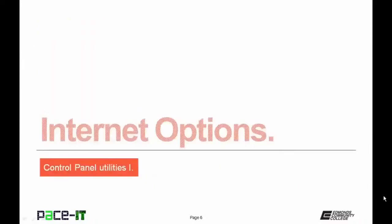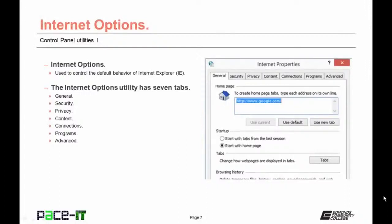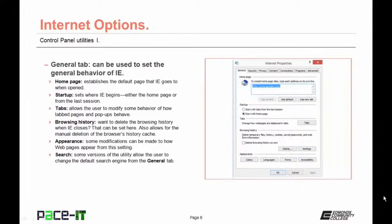The General tab sets the general behavior of Internet Explorer. From here you can set the home page. From the Startup setting, you decide where Internet Explorer begins — either from the home page or from the last session. The Tabs section allows modification of how tab pages and popups behave. The Browsing History section allows control over cookies and history — you can set Internet Explorer to delete browsing history when it closes, or manually delete caches. From the Appearance section, modifications can be made to how web pages appear.